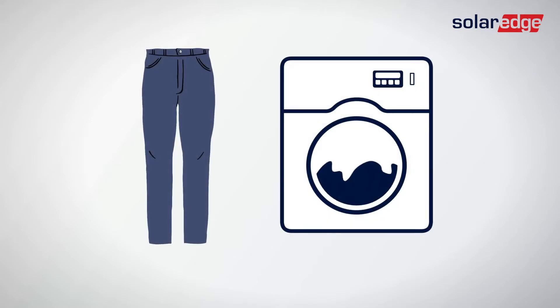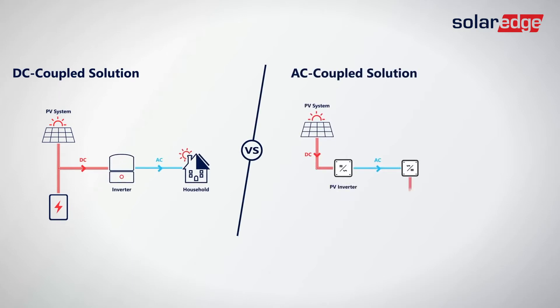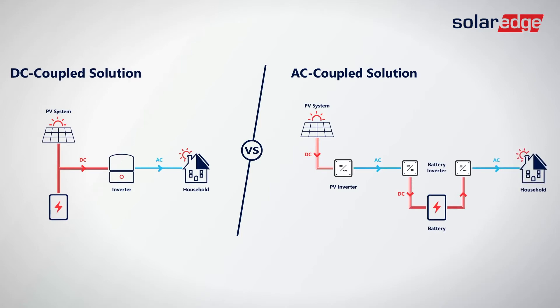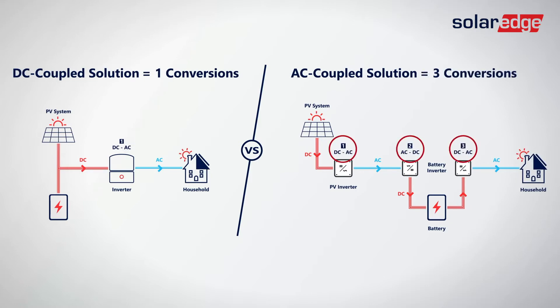So what does this mean in terms of efficiency? Well, Varsha, have you ever put dark blue jeans in the washing machine and noticed that every single time you wash those blue jeans, they tend to fade a little bit? This is what's happening with energy. Every time you convert that energy before you can actually use it in the house, you're fading or diluting that energy a little bit. So in a DC coupled solution with SolarEdge, you only have one conversion of energy, and in an AC coupled solution like our competition, you have three conversions of energy, causing a less efficient system.